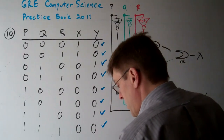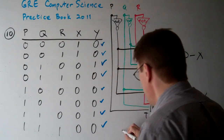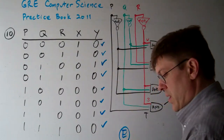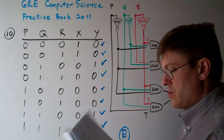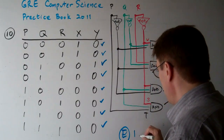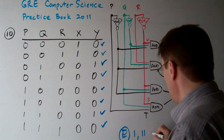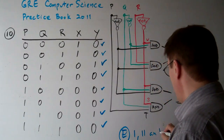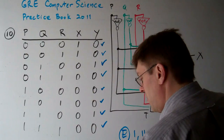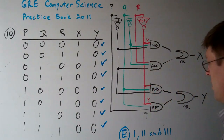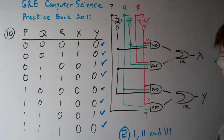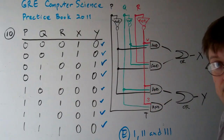So the answer is E. The question asks which of the following statements are true. The answer is E — one, two, and three. All the statements are true. All three lines are correct.